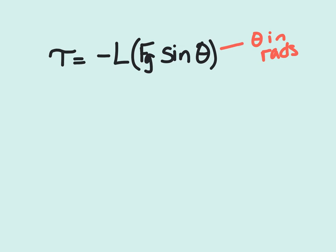To get us started, we have our torque equation. Torque equals negative length times the force of gravity sine of theta, which is going to equal negative length force of gravity theta, where theta is small and is in radians.